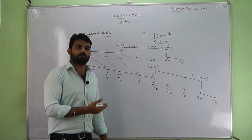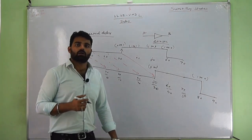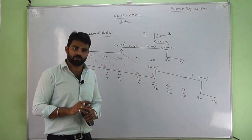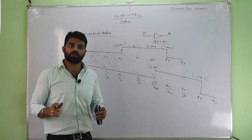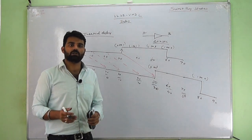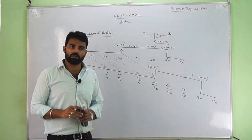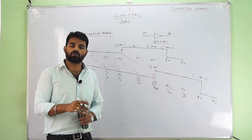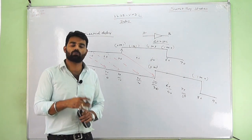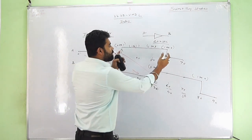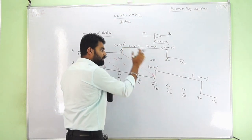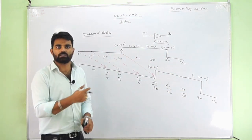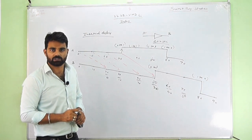So the verdict of inertial delay is: if there are two events, they should be separated by at least more than the inertial delay, or else the output will get overlapped — that is, the second event will be overlapped over the first one. If the gap between two events is such that the first event is executed before the second event occurs, then obviously it will be executed. This is what is inertial delay, or default delay of VHDL.